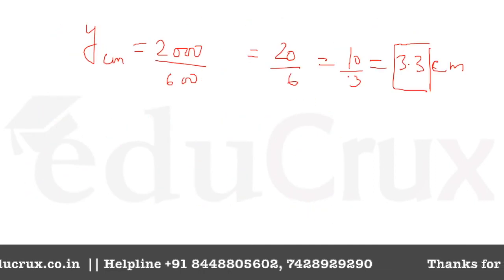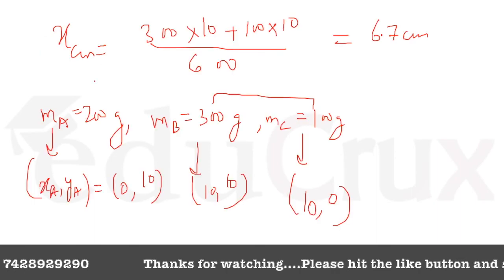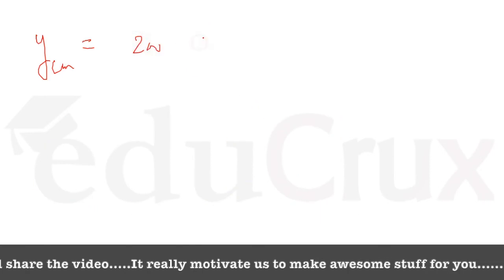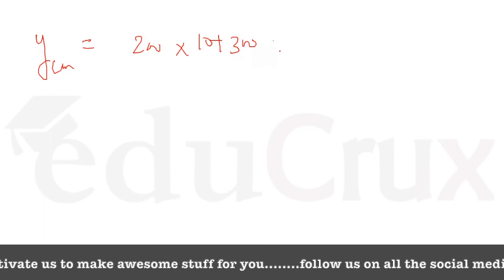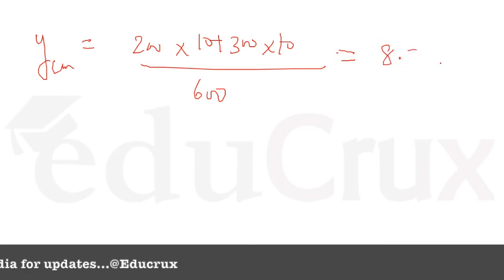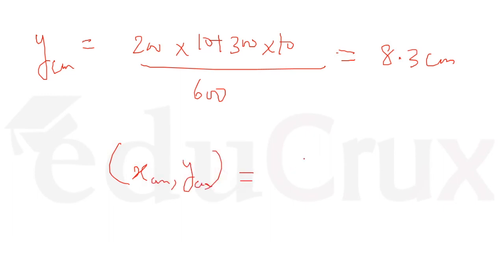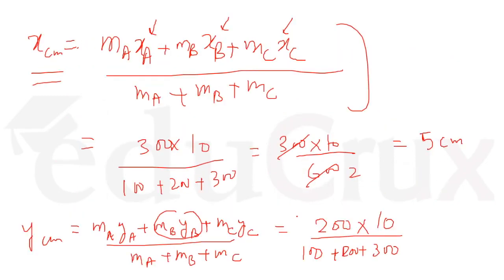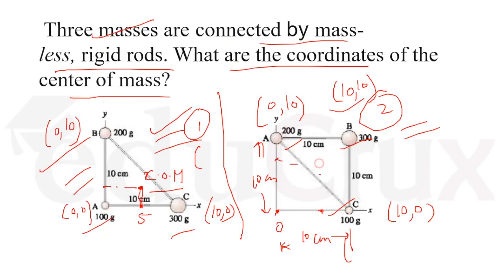For Y_cm: y_A = 0, y_B = 10, y_C = 0. So Y_cm = (200×10 + 300×10 + 0) / 600 = 5000 / 600 ≈ 8.3 centimeters. Marking these on the figure, X = 6.7 and Y = 8.3 gives us the location of the center of mass for the second figure.